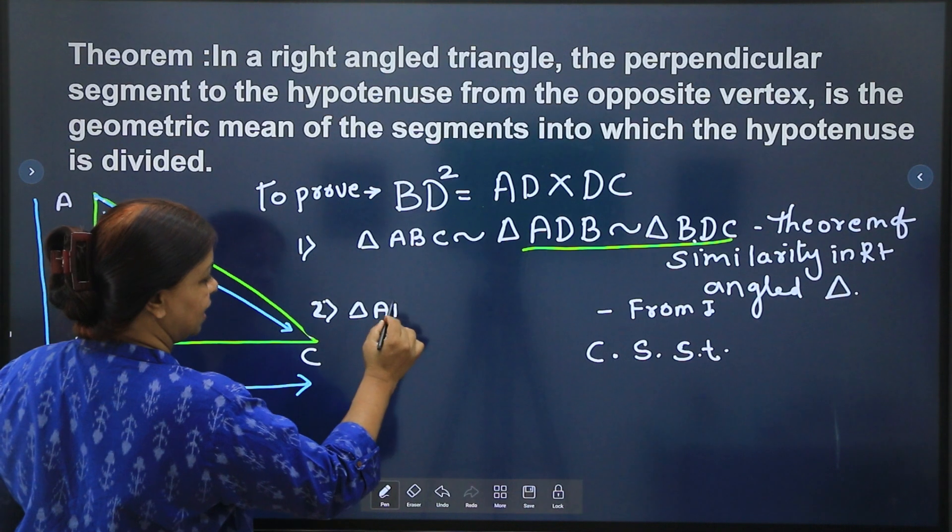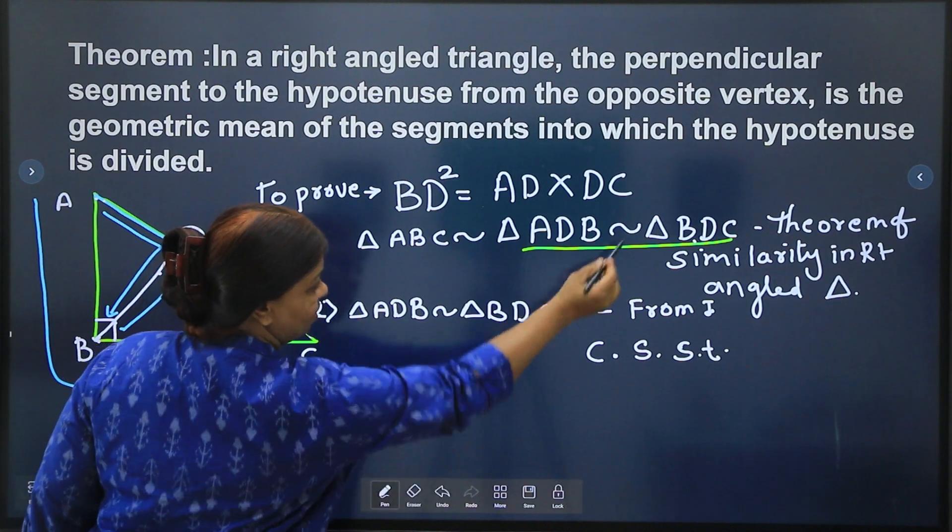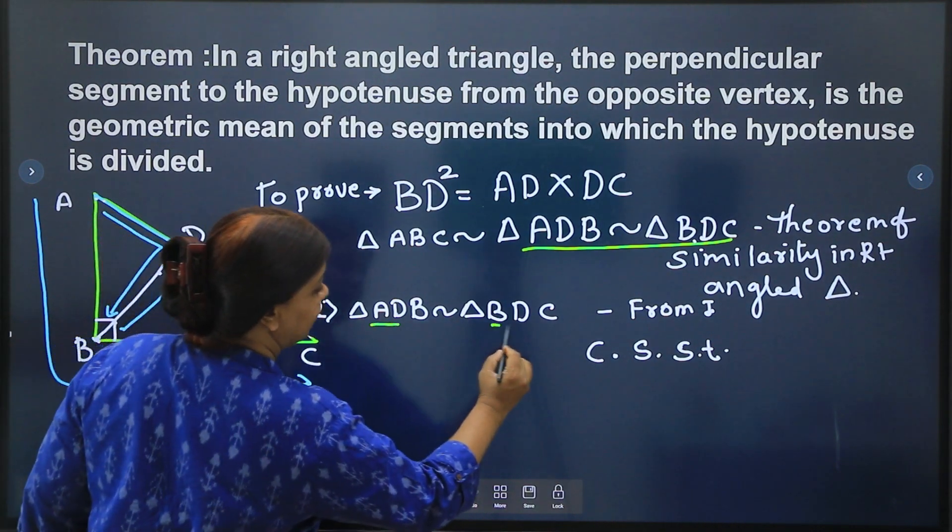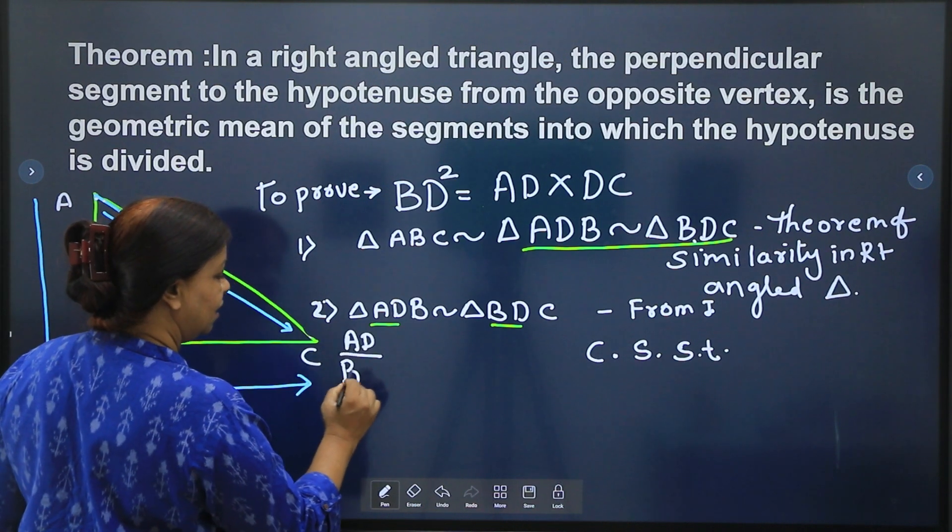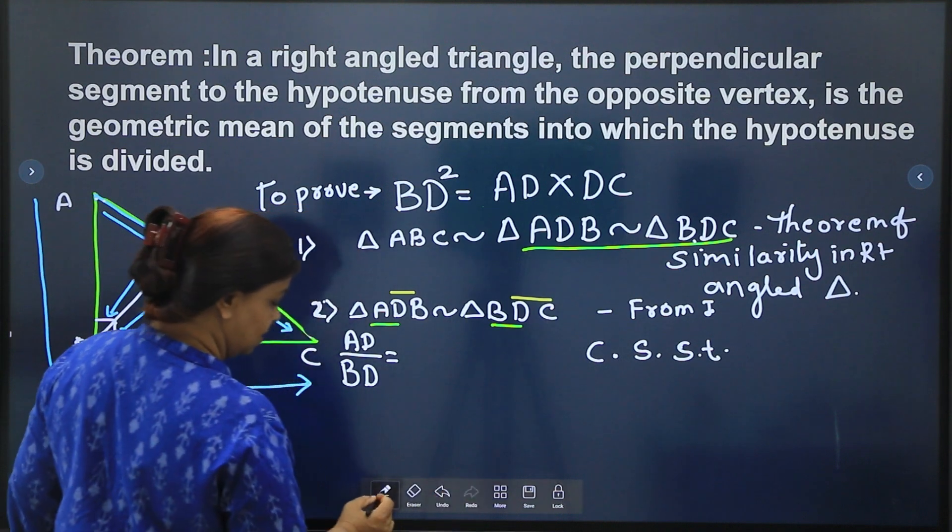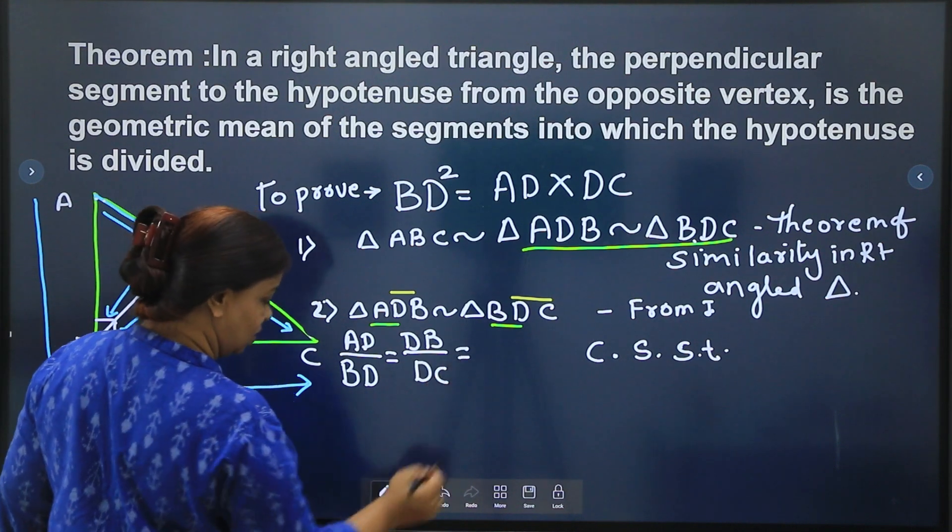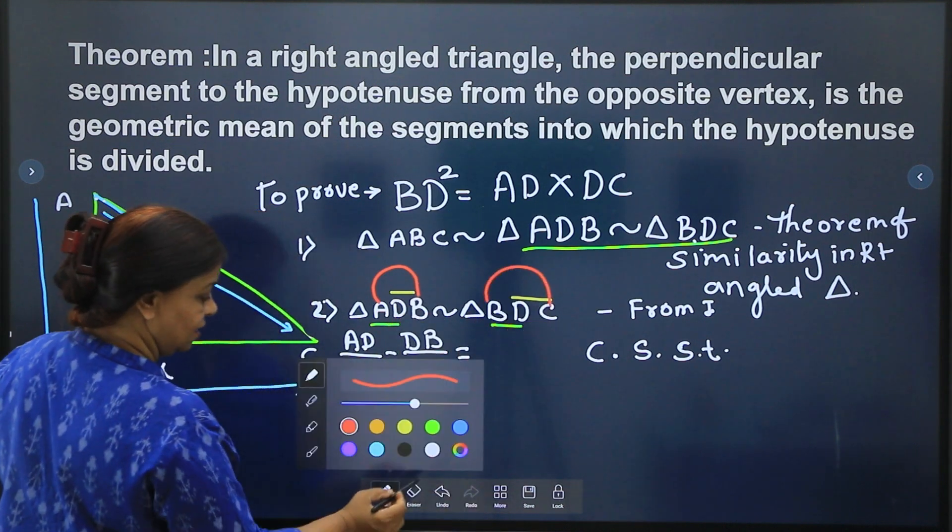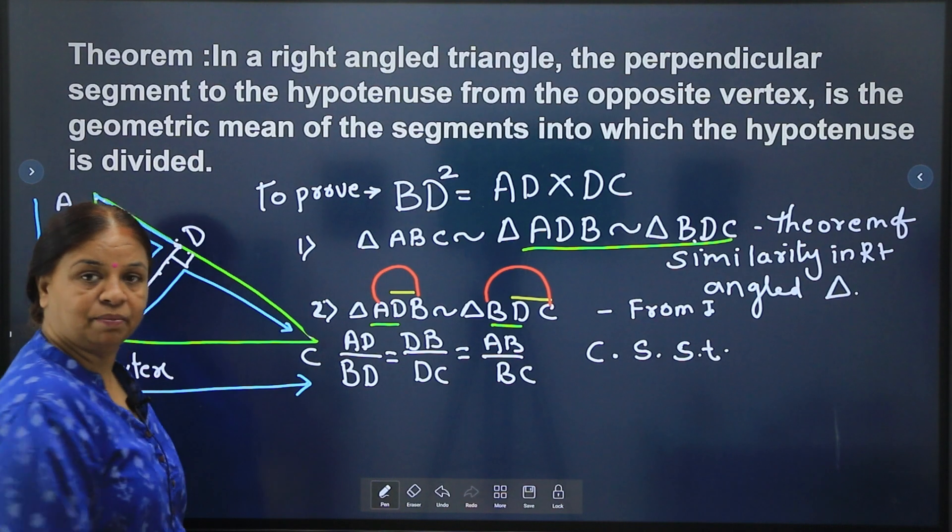Second point: triangle ADB similar to triangle BDC from 1. Now I will take corresponding sides. AD upon BD is equal to DB upon DC is equal to AB upon BC. AB upon BC and reason is corresponding sides of similar triangles.